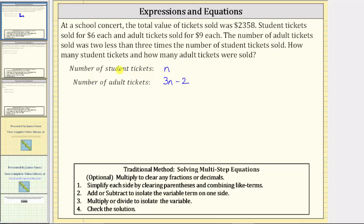Now we'll determine the value of the student tickets and the value of the adult tickets, which we know has a total value of $2,358. Every student ticket costs $6, which means 6 times n represents the value of the student tickets sold. Every adult ticket costs $9, so we would have plus 9 times the number of adult tickets, which is the quantity 3n minus 2. This represents the total value of the tickets sold, which we know is equal to $2,358.